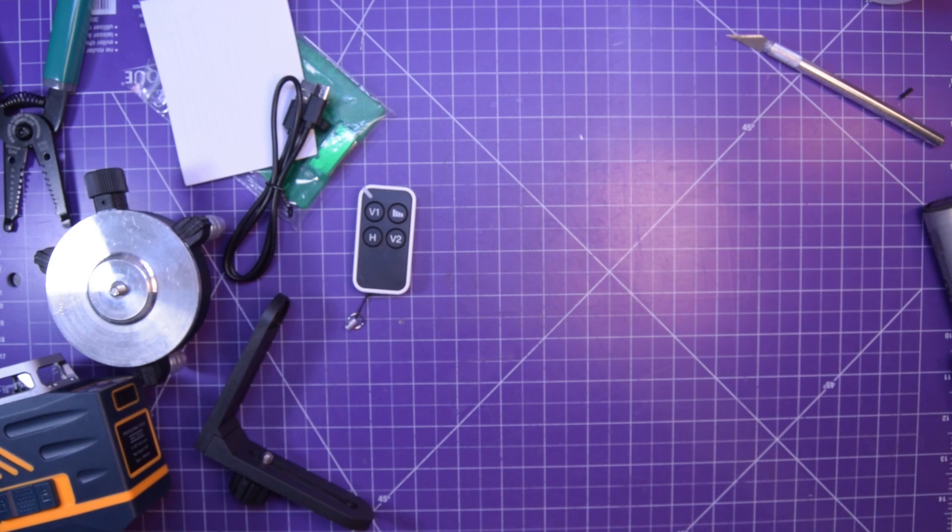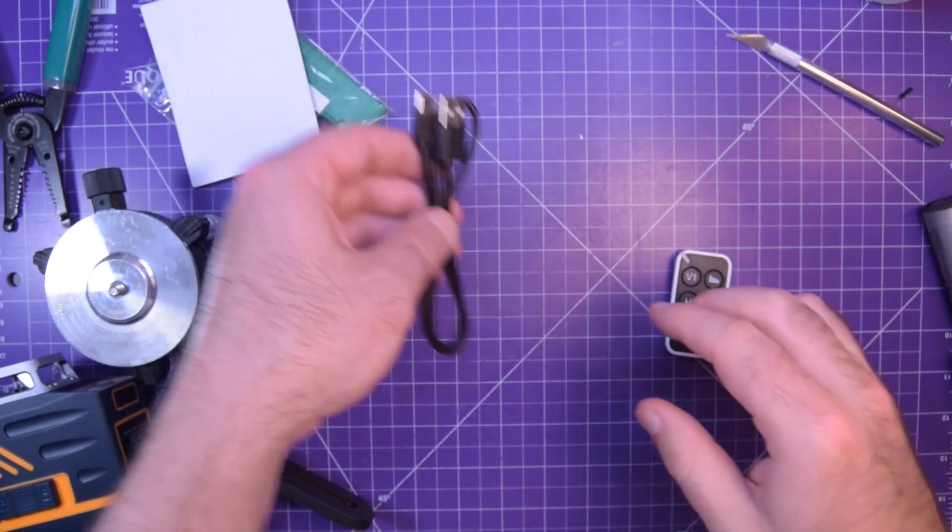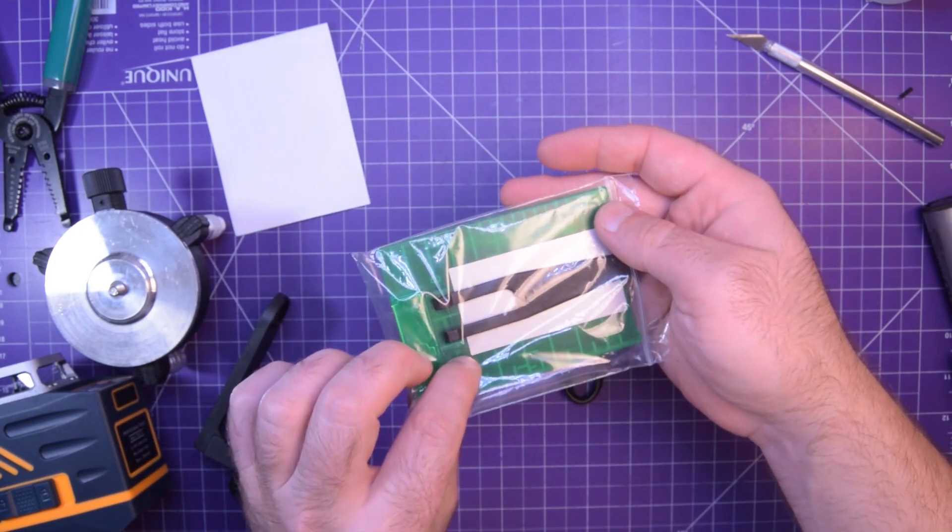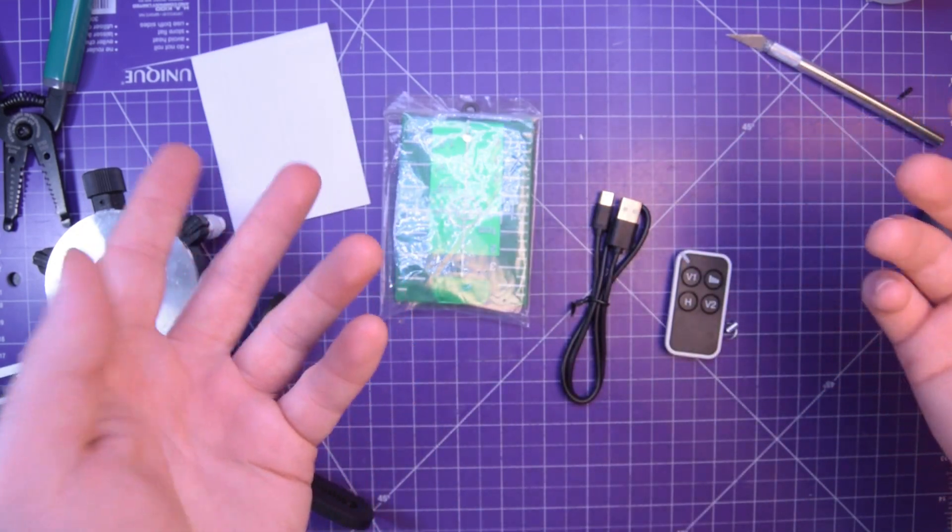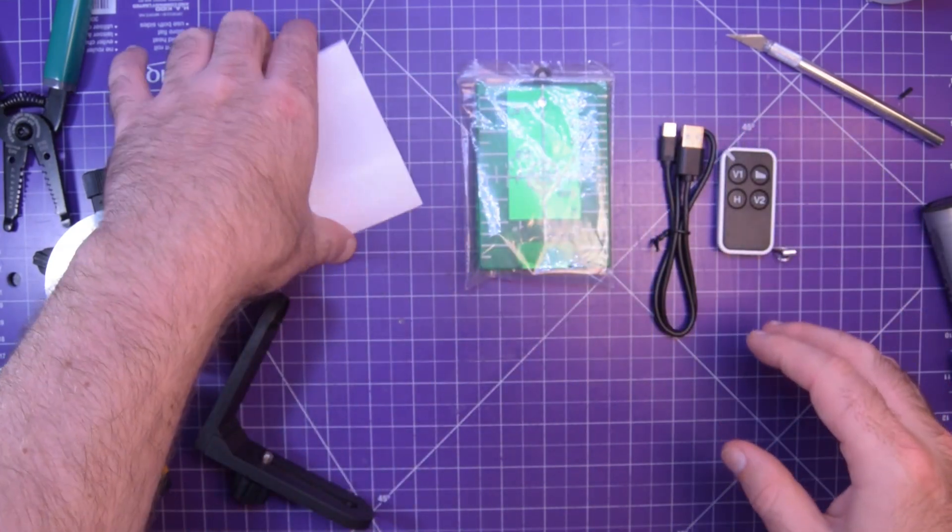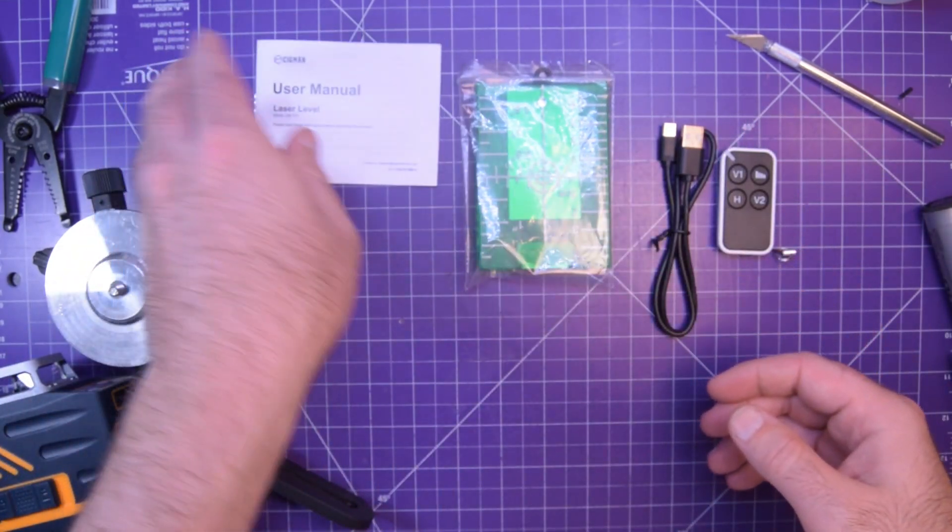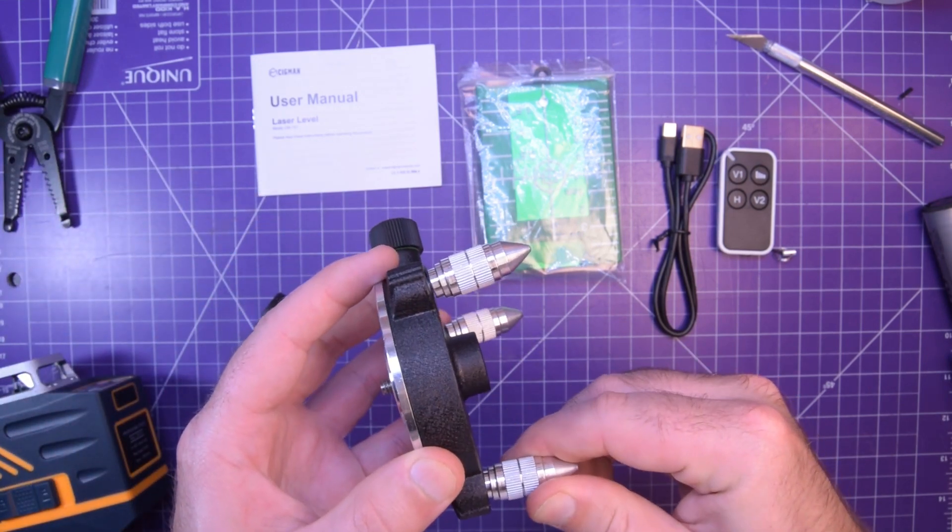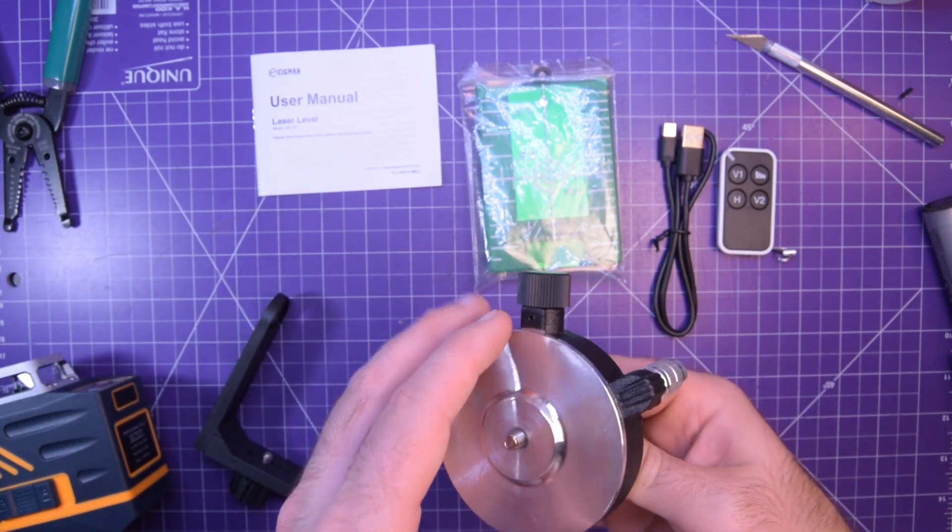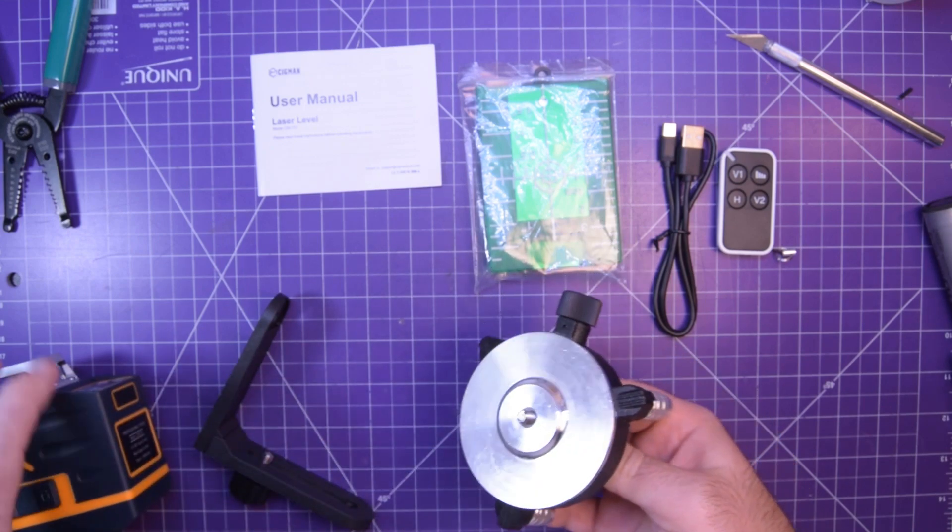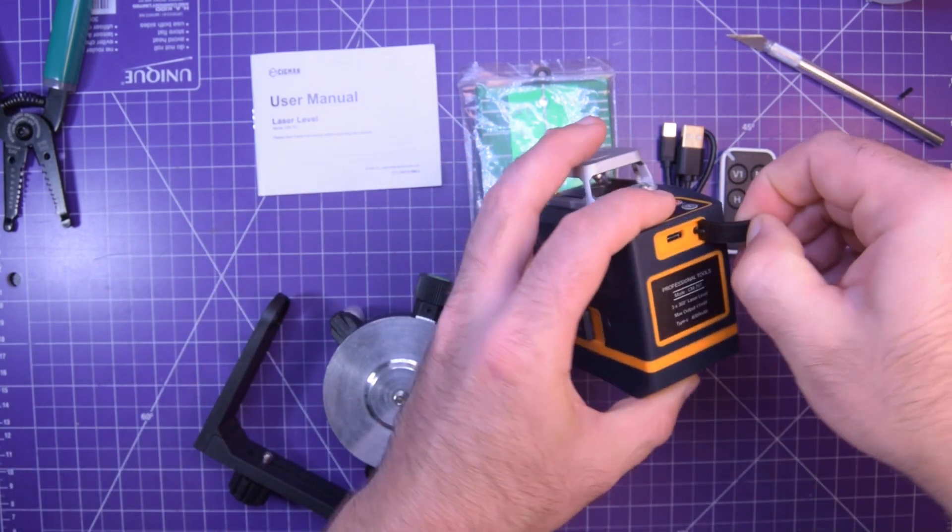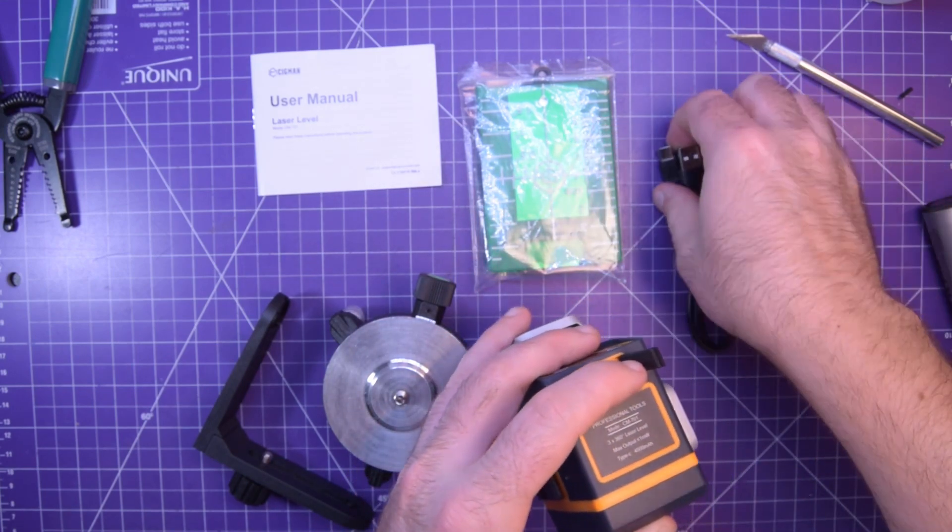What I can tell you is that the foam in the case is pretty freaking awesome. All right. So it comes with a remote, USB lead, some sort of target. Look, I'm not a construction worker by trade. I have no idea how to use these things, but it comes with this little base as well. And there's a tripod mount on the bottom of the laser level itself. It is USB rechargeable with USB-C. Actually, that's quite fancy.